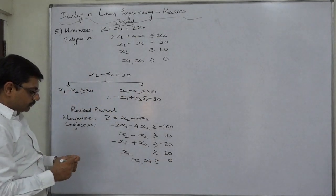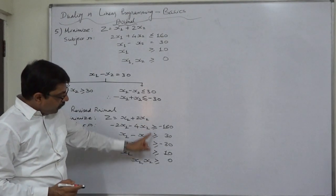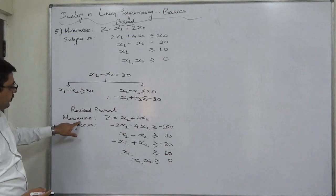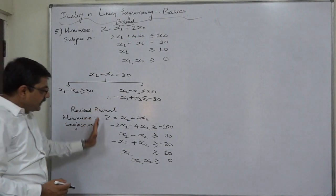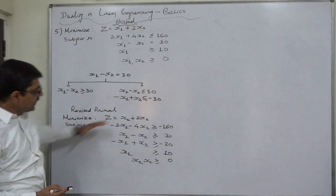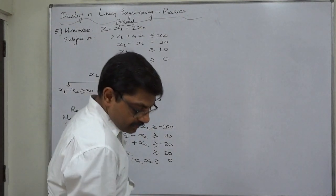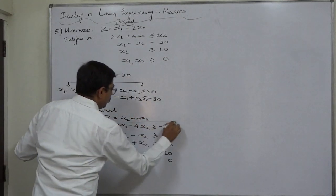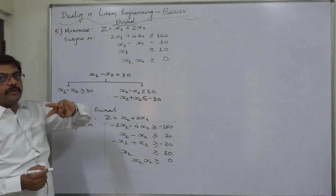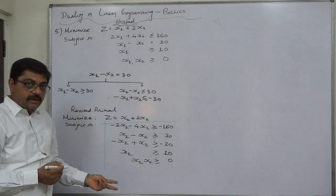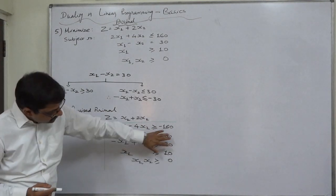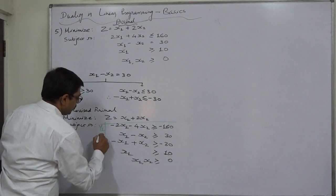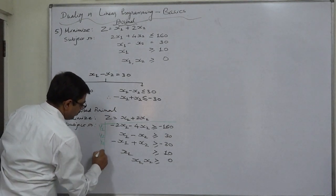Now all constraint signs are greater than or equal to, directly matching the minimization objective. We can write the dual of this revised primal. The number of variables in the dual will be exactly equal to the number of constraints in the primal — so there will be four dual variables: y1, y2, y3, and y4.